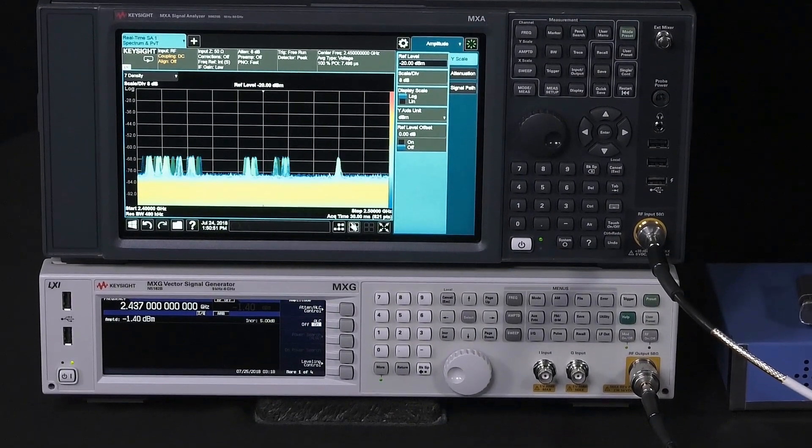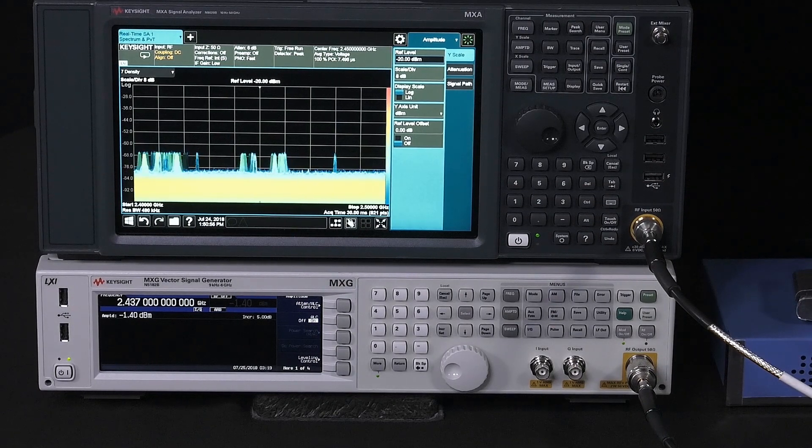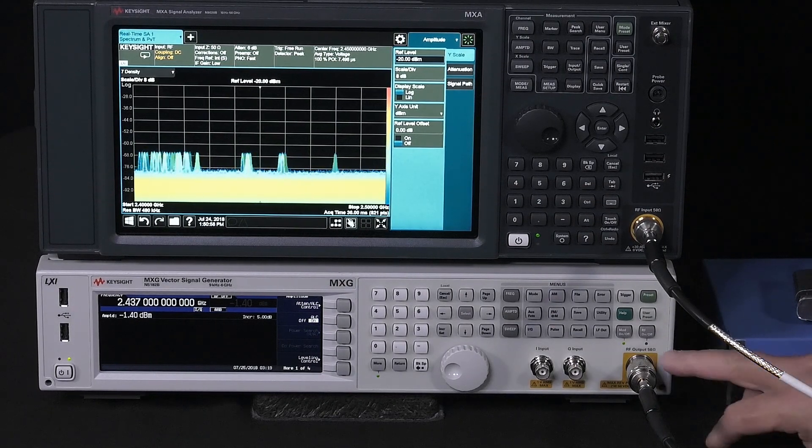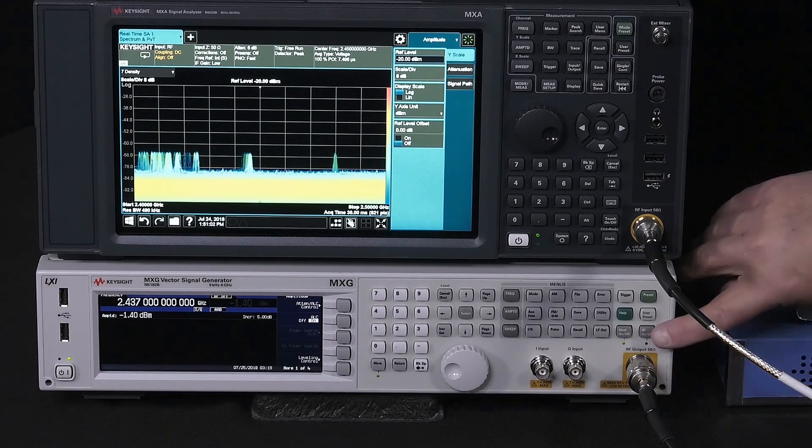So we're hearing the music now, and what we see on the MXA is the Bluetooth signal skipping around. I'll now introduce an interfering signal of wireless LAN, and we can hear interruptions begin.